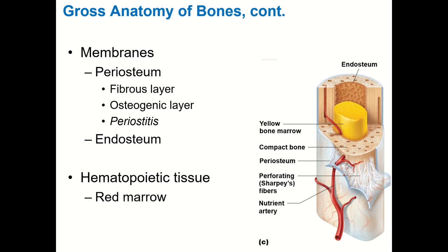Hematopoietic tissue — hemato referring to blood, poietic to origin — is where blood cells originate. That's your red bone marrow, found inside the flat bones in adults. In children and infants it's also found in long bones, but as they develop it gets replaced by yellow marrow.